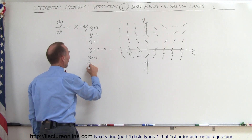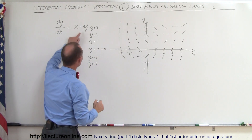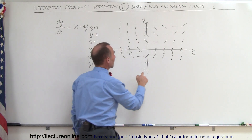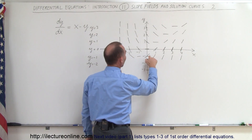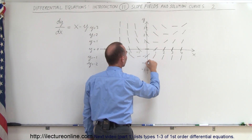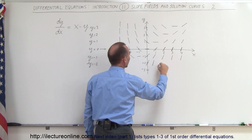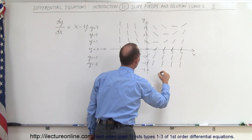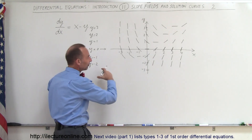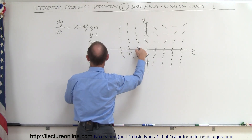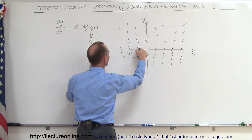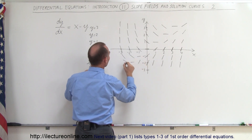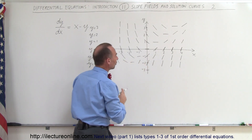How about the line y equals negative 2? Since it's minus and minus 2, it's like adding 2 to the slope. So here the slope is 1, then 2, here would be 3, 4, 5, and 6. On the left side: negative 1 plus 2 would be plus 1, here would be 0, here would be negative 1, negative 2, and so forth.